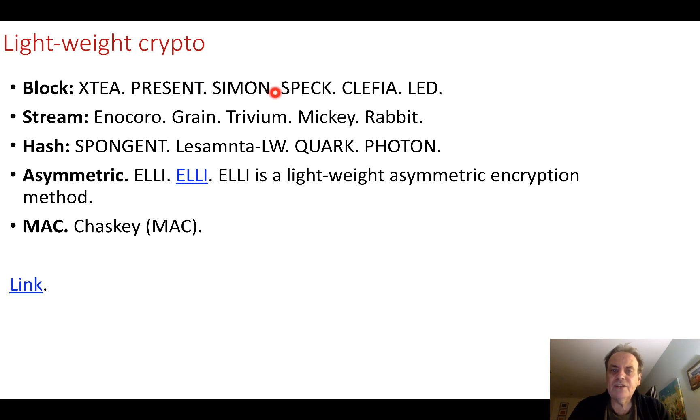XTEA, PRESENT, SIMON, SPECK, CLEFIA, LED—our block ciphers. Some of them are based on the AES standards that we see but are stripped down, maybe with smaller block sizes and fewer rounds and so on. But the faster ones, as we'll see, are the stream ciphers: Enocoro, Grain, Trivium, Mickey, Rabbit. In this presentation we'll have a look at the Rabbit stream encryption method.